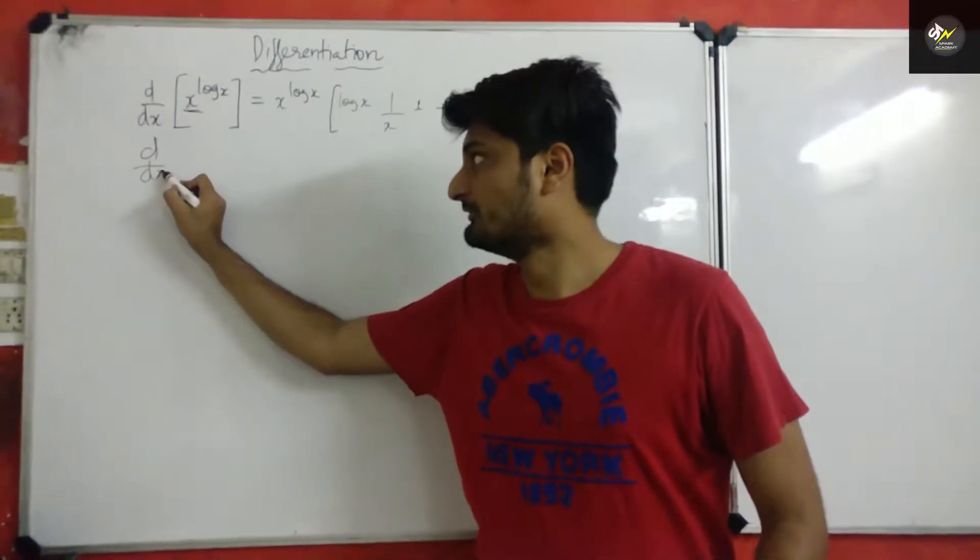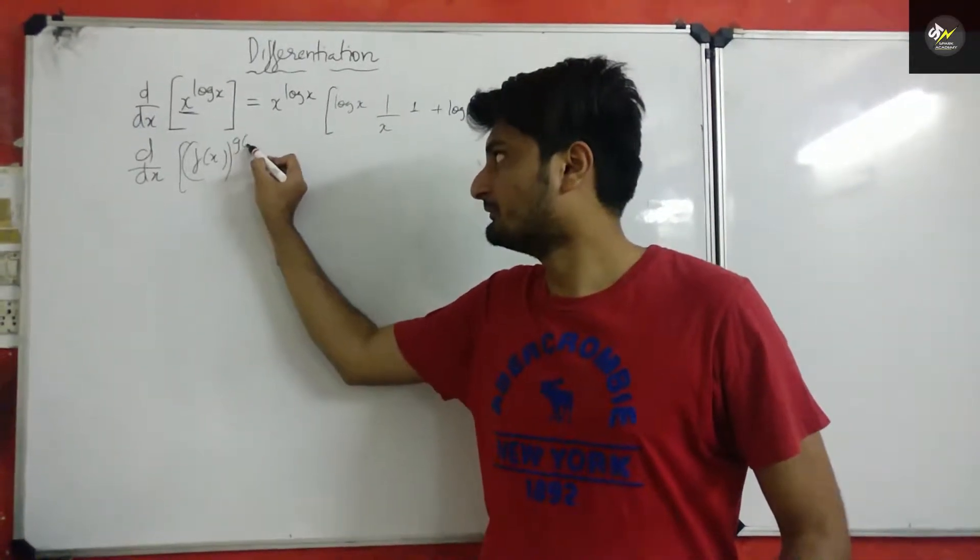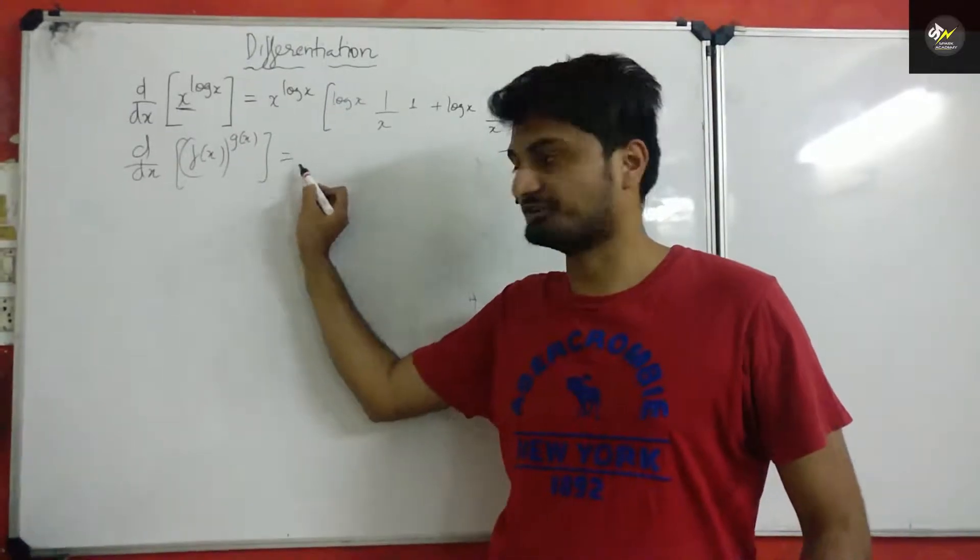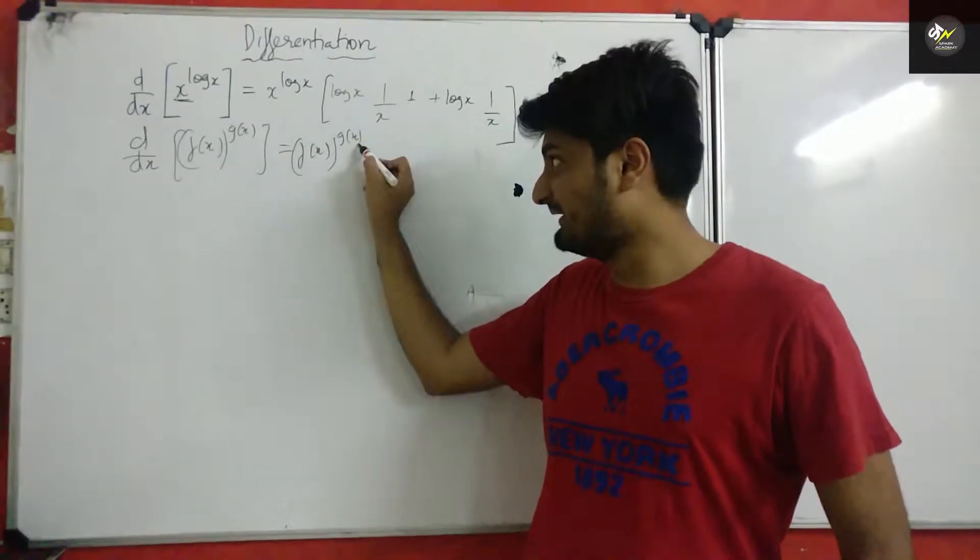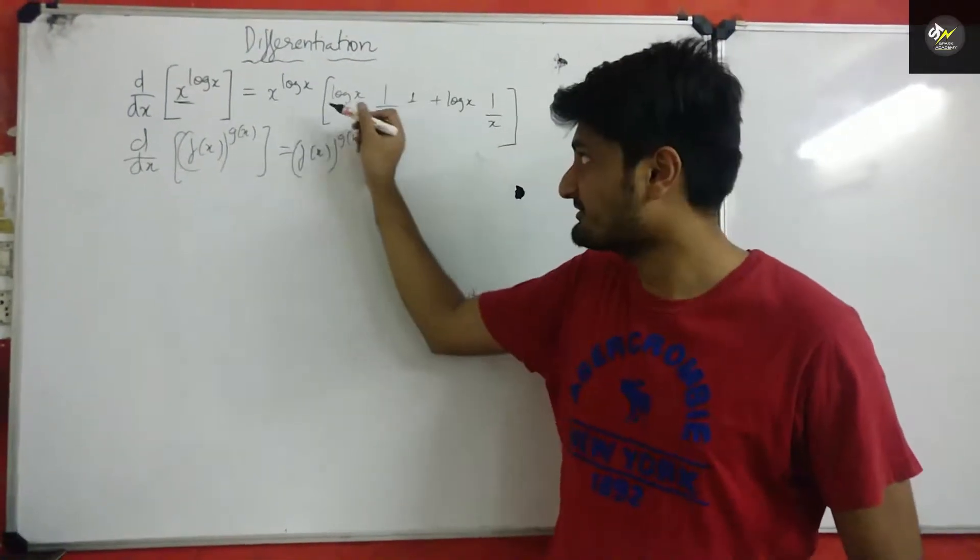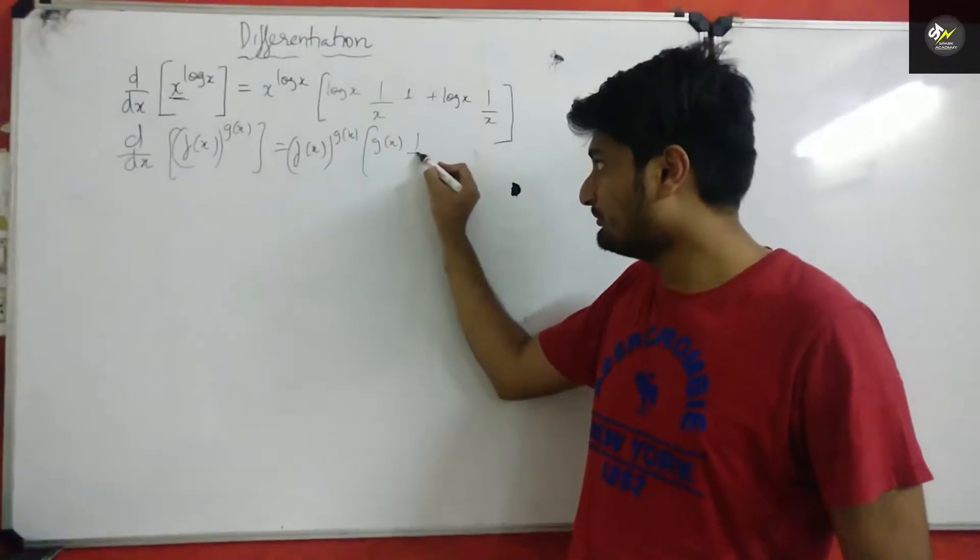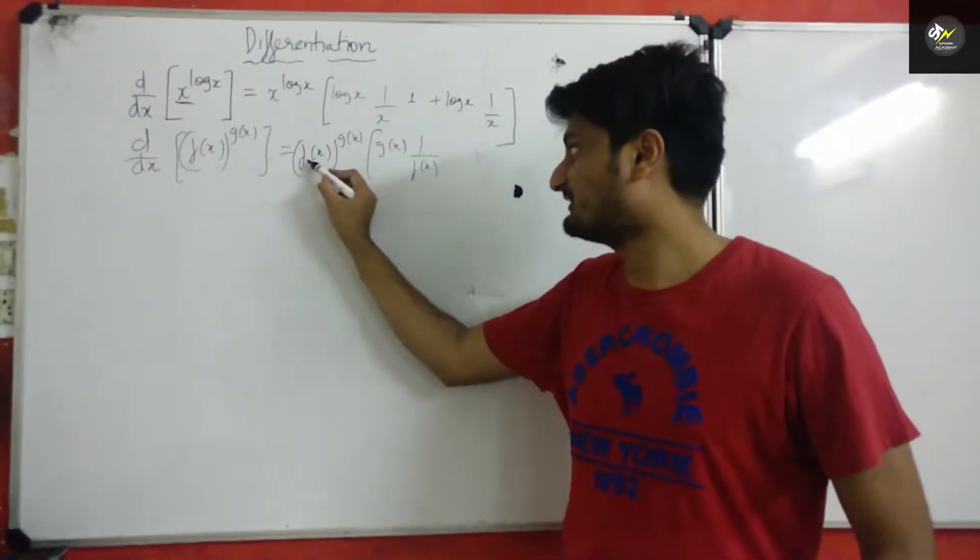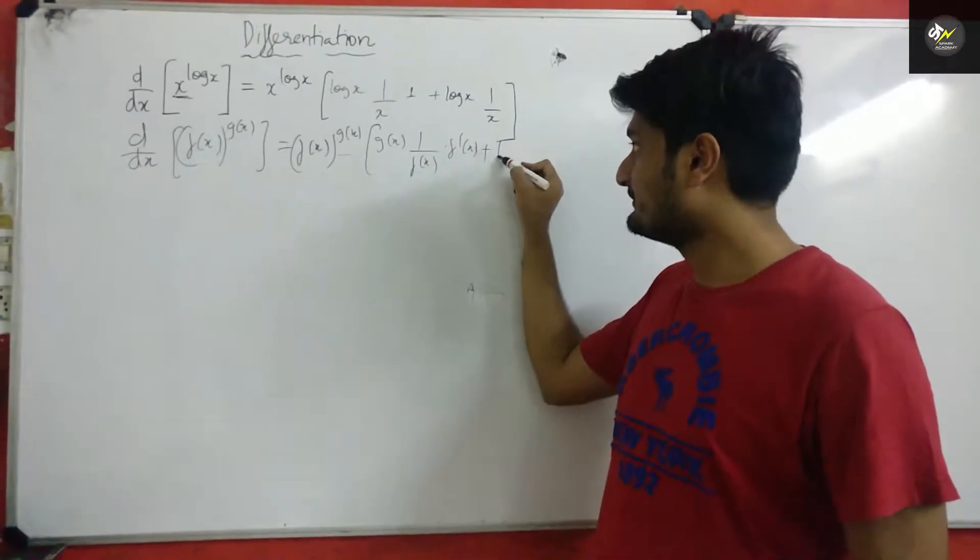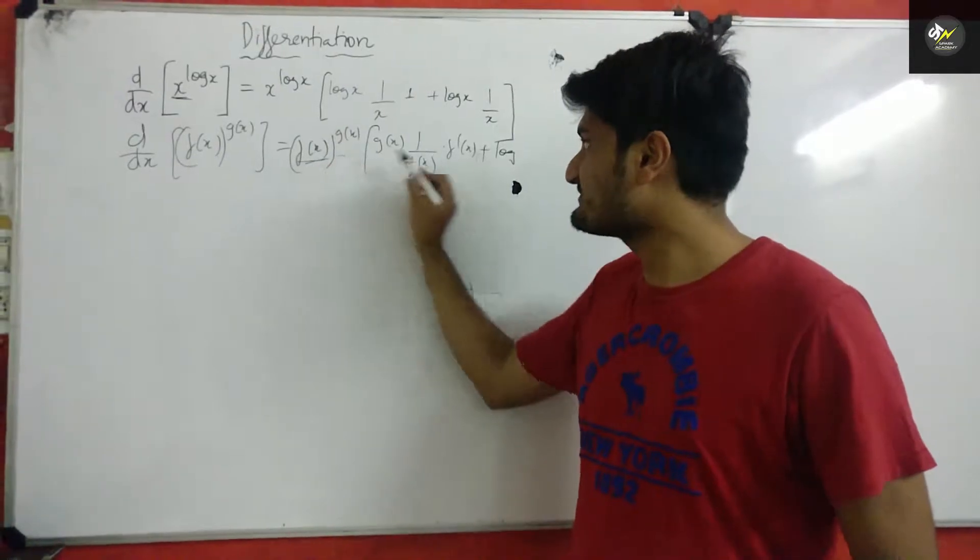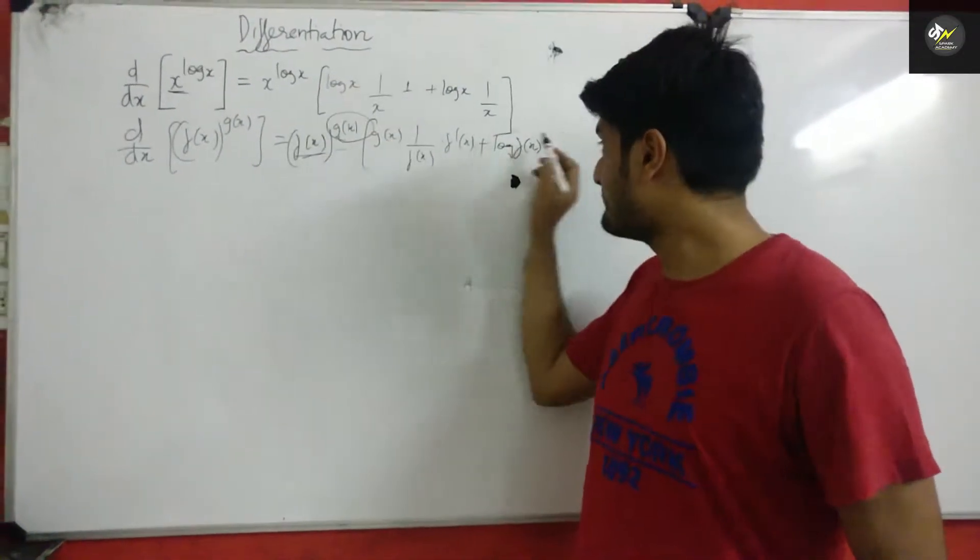So this is in the form of d by dx of a function whole power another function which can be written as the function, the complete function f of x whole power g of x into the power term into 1 by base term into the base derivative plus logarithm of base into the power derivative.